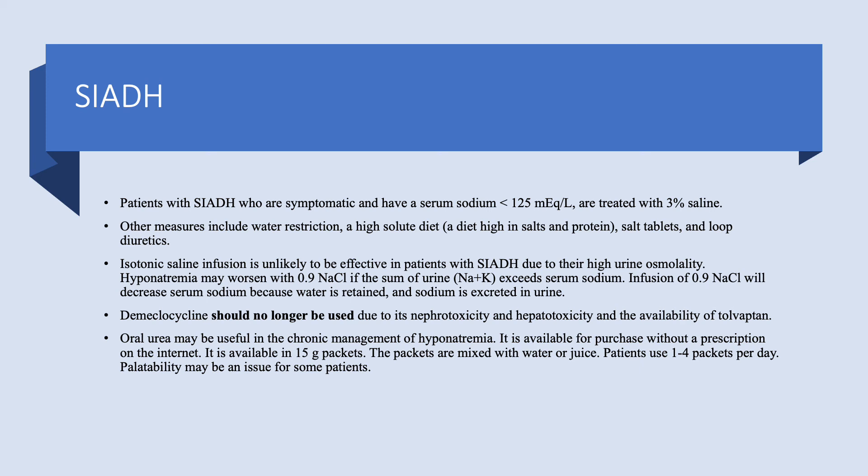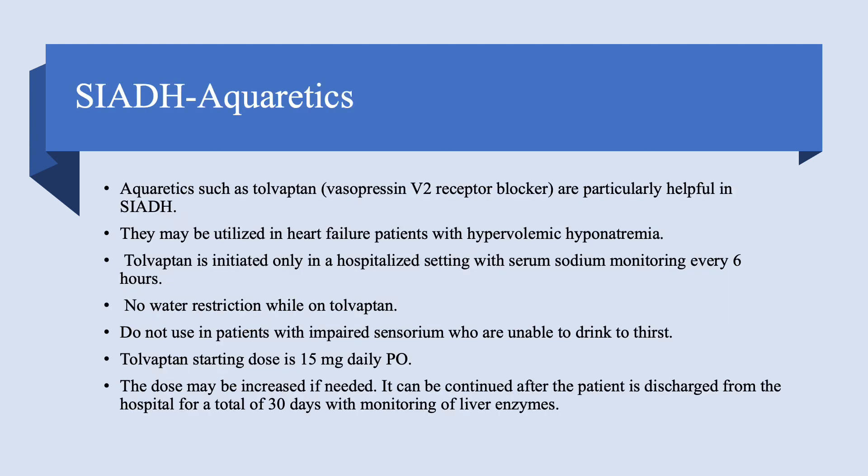Aquaretics — meaning water diuretics — include tolvaptan and conivaptan. These are vasopressin V2 receptor blockers that block the effect of vasopressin on the collecting tubule in the kidney, producing a pure water diuresis. This is very different from thiazide or loop diuretics. These medications work extremely well in SIADH — tolvaptan works like magic — because you're treating the actual cause: inappropriate vasopressin secretion is blocked by a vasopressin receptor blocker.